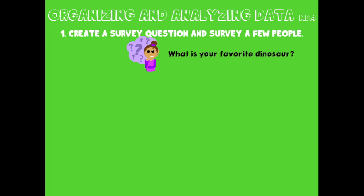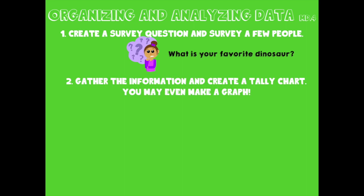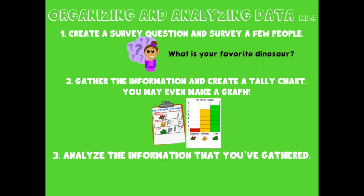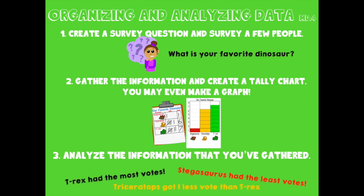First, you need to create a survey question and survey a few people, like what is your favorite dinosaur? Then you need to gather the information and create a tally chart. You may even make a graph, but today we're only going to really focus on the tally chart. And then finally, you need to analyze the information that you've gathered, like T-Rex had the most votes, or Stegosaurus had the least votes, or maybe even Triceratops got one less vote than T-Rex.